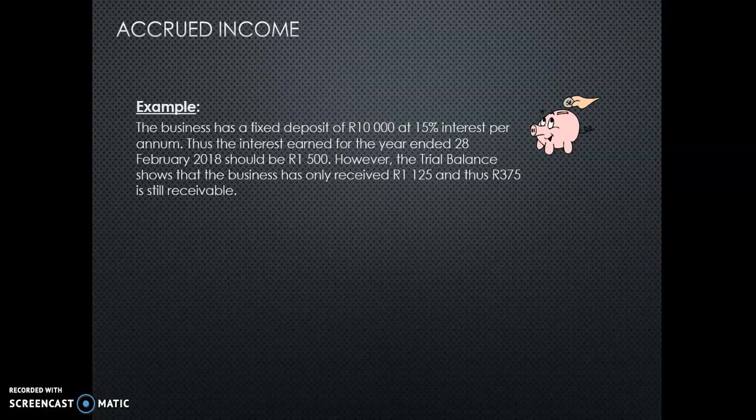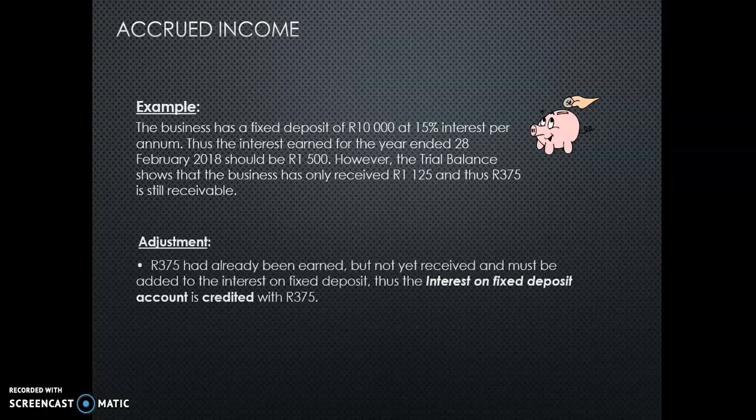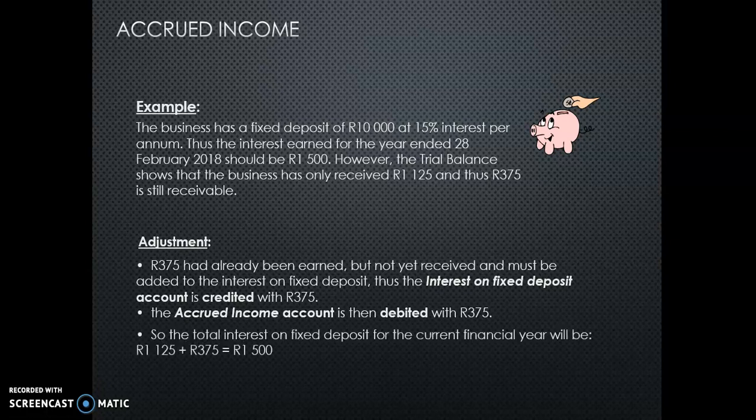Look here. The business has a fixed deposit of 10,000 Rand. The interest rate is 15%, so the interest for the year should be 1,500. But on the trial balance you've only received 1,125, and the amount of 375 is still receivable. So that 375 has already been earned — it is income, but it has not been received. Therefore it must be added to the income: interest on fixed deposit on the credit side, because you are increasing the income. The debit is 375 — the accrued income account, because they owe you that. The total interest should have been 1,500, and now it is 1,500: 1,125 actually received plus 375 accrued income.